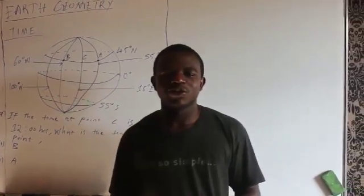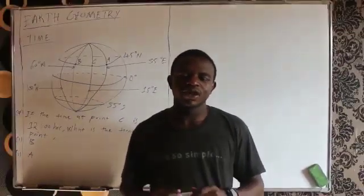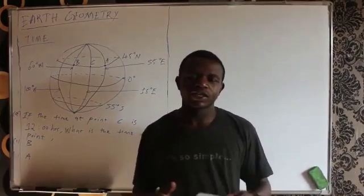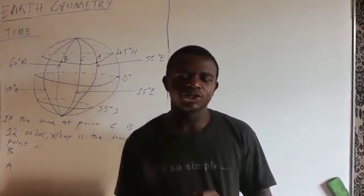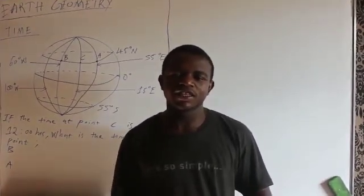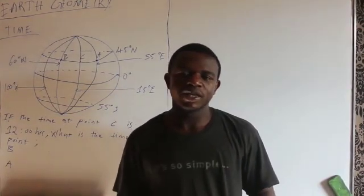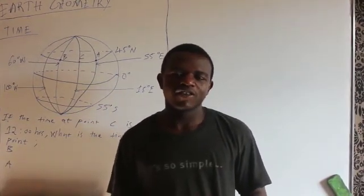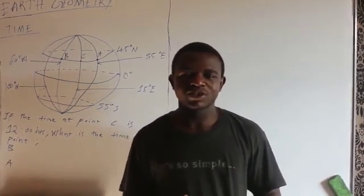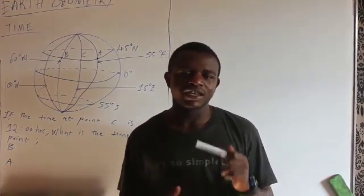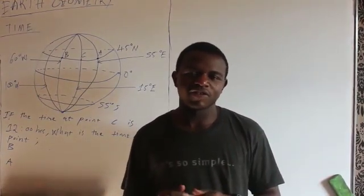The next thing we're going to look at is time — specifically, how can you calculate time. The first thing you're supposed to do is find the difference in longitude between two places. After you find the difference in longitude, you divide that difference by 15.